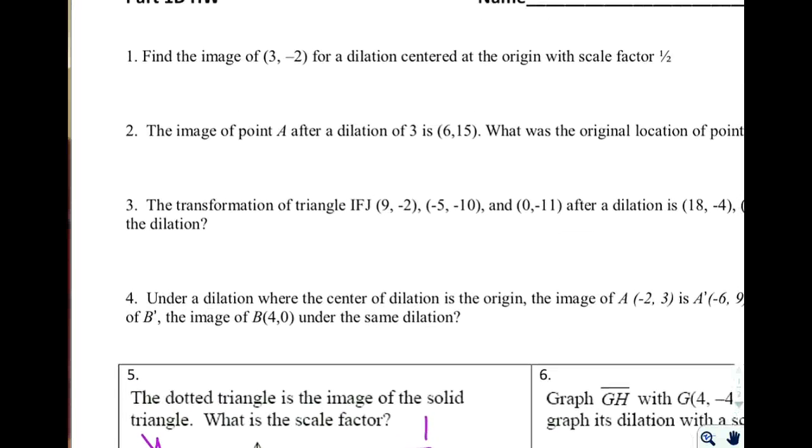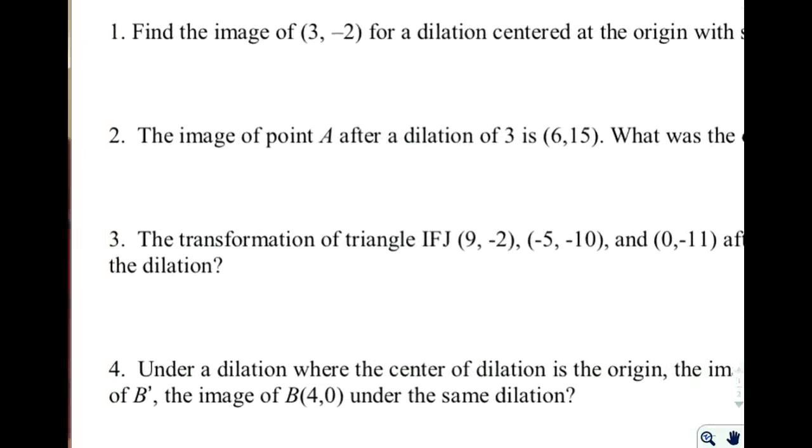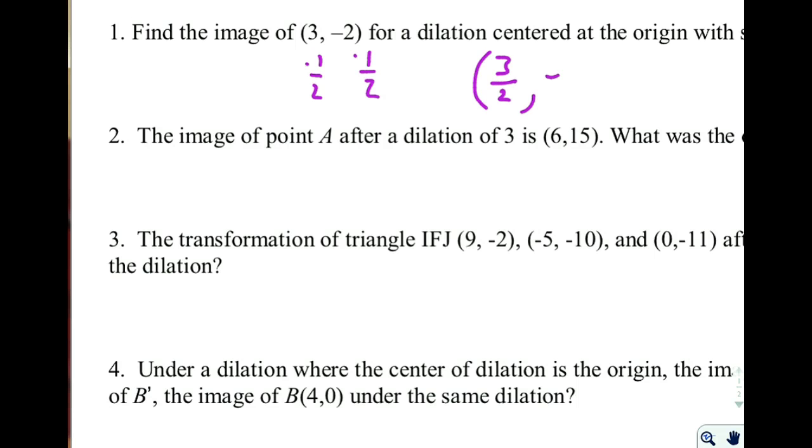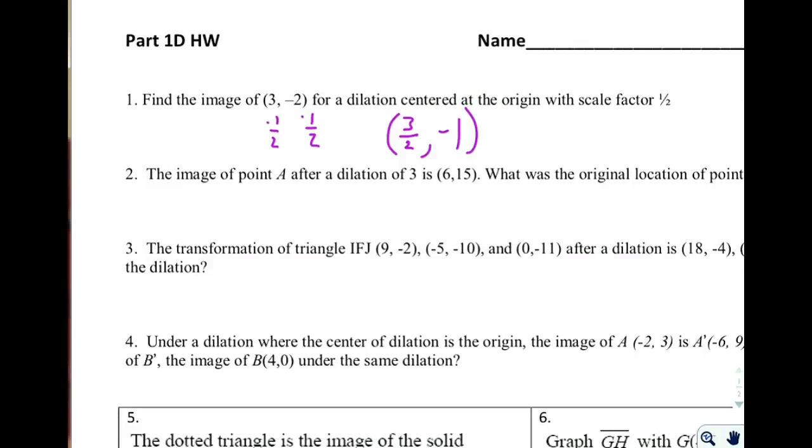So let's go back up to number one. It says, find the image of the point three, negative two for a dilation centered at the origin with a scale factor of one-half. Same scale factor as we had in number five. What you would do is multiply each of these coordinates times one-half. And when you do that, you get the coordinate three-halves, or one-point-five, and negative one. One-half times negative two is going to be negative one. So that's going to be the image, or the new point.